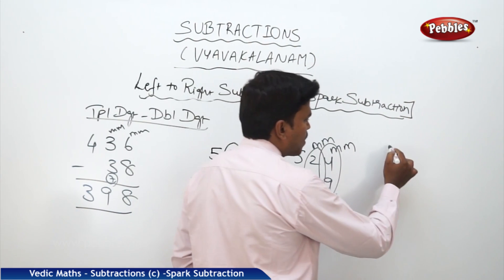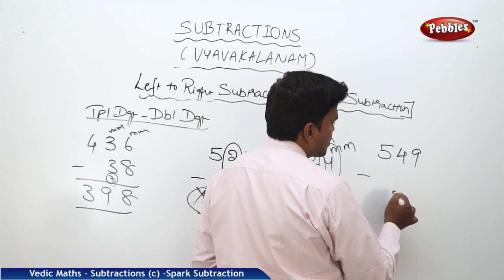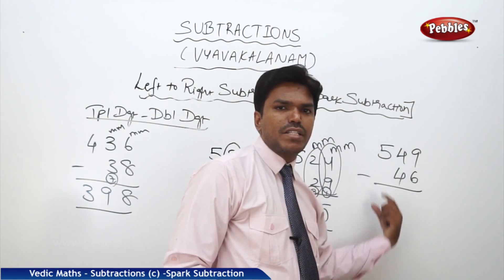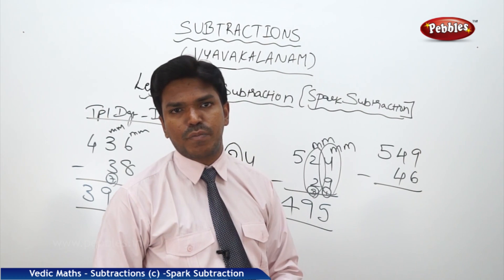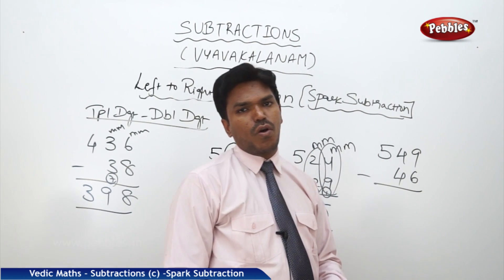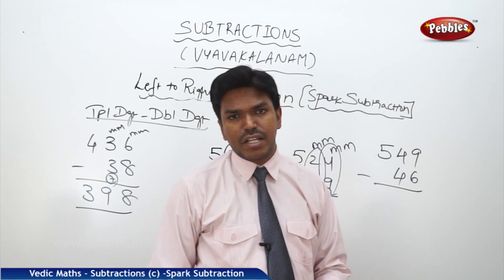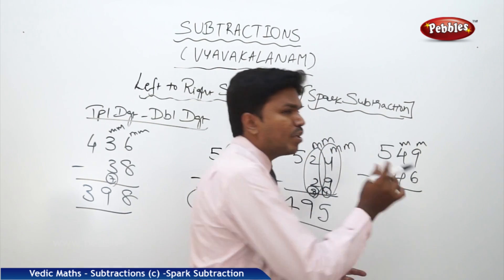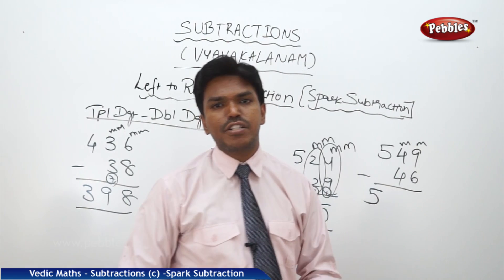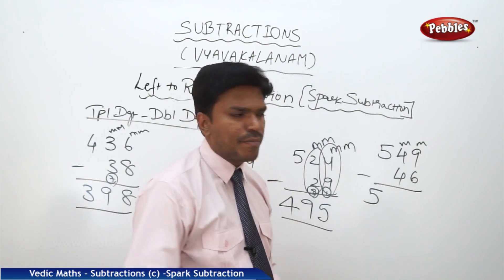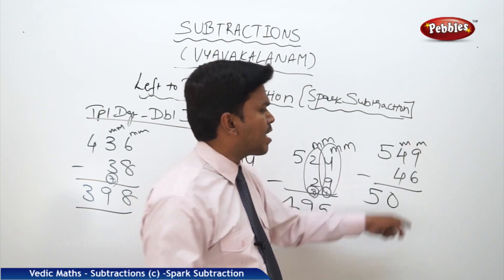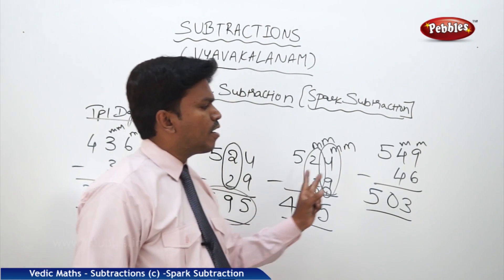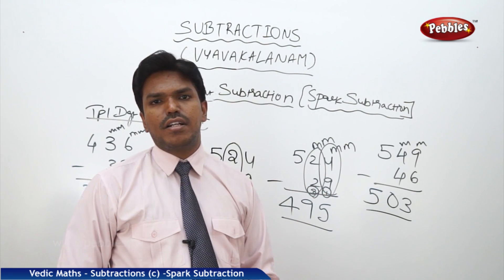One more example. 549 minus 46. Drop 5 as it is, but before dropping 5, check whether the next numbers are match or mismatch. We cannot say for 4 and 4 — go for next. 9 and 6 — they are matched. If the next are matched, the previous pair is also considered matched. So 5 will be 5 only, no need to reduce. Now 4 minus 4 directly — it's a match — you get 0. And 9 minus 6 is 3. So the answer is 503.